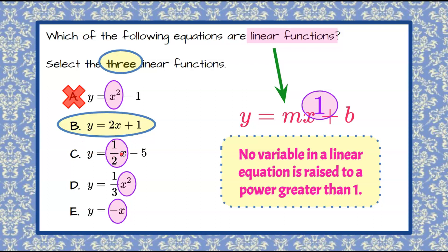C, one half x with an invisible 1 exponent, so that is also written in slope intercept form and is a linear function.